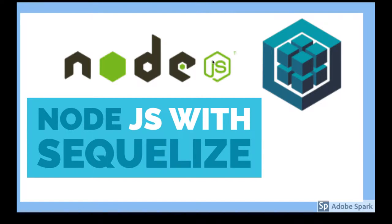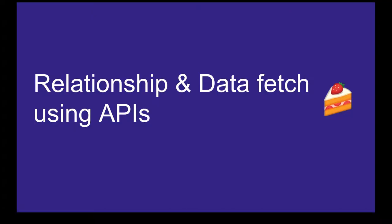In this video we are going to talk more about how we associate one table with another in Sequelize. We will discuss how to define associations and what code we need to write while fetching data from one table to another. Internally Sequelize uses joins, but we write the tags or methods provided by Sequelize to get data where a relationship and foreign key are already defined.